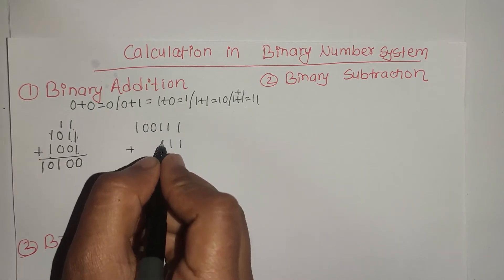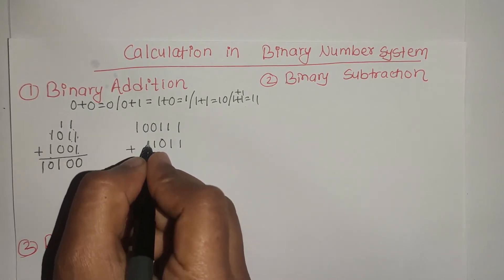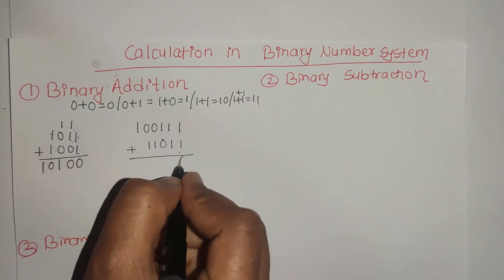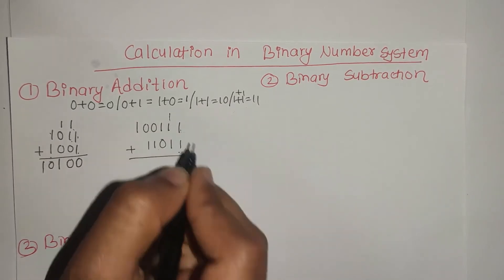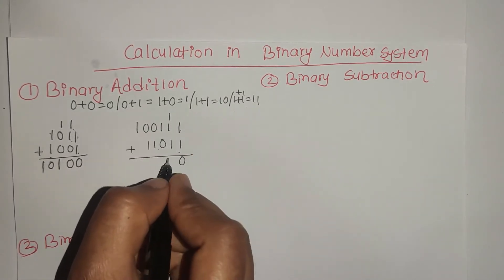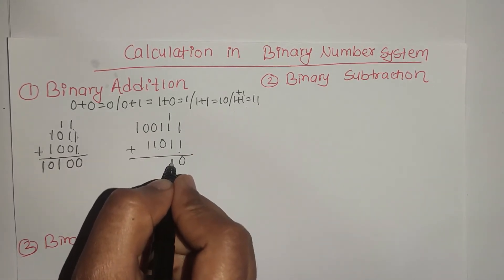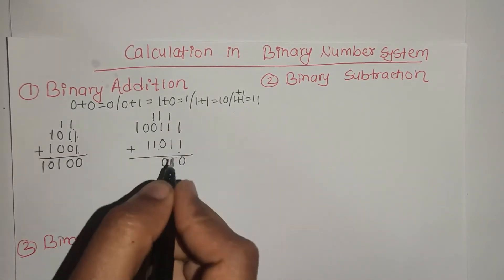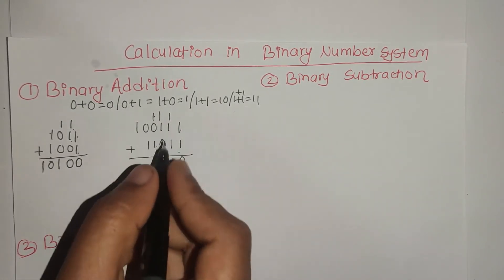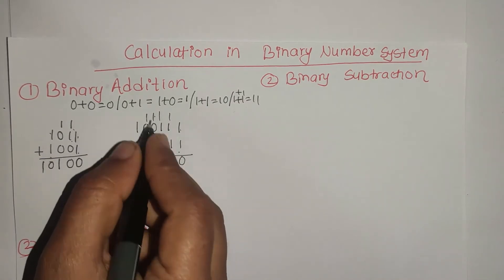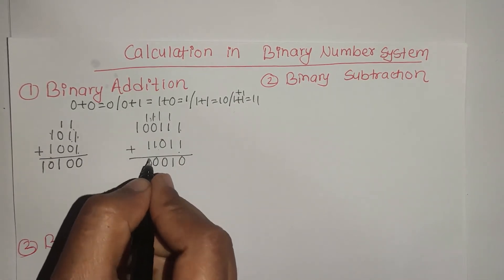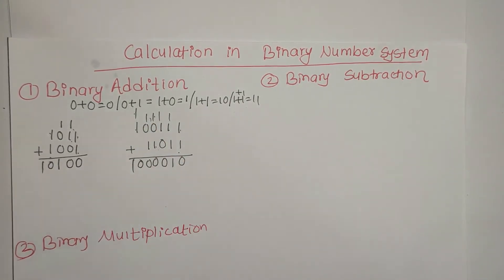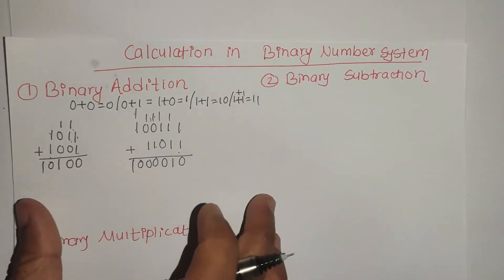Another example: 10011 plus 11011. Working through the addition column by column, applying the binary addition rules. This is binary addition.